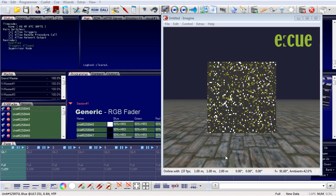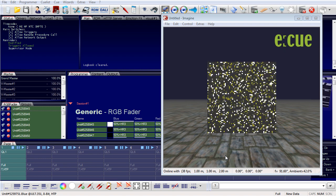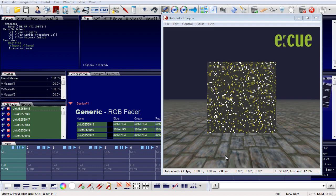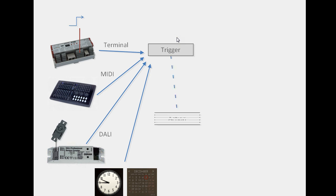Triggers and actions are a key concept in the Lighting Application Suite, especially in the programmer. There can be several events in the system — for example, a digital input on a Butler XT2 receiving a signal, a MIDI device sending a MIDI message, a DALI device with a motion detector signaling motion, or simply a time, date, or astronomical clock event. This event sends a message to the programmer and a trigger is created, followed by an action.